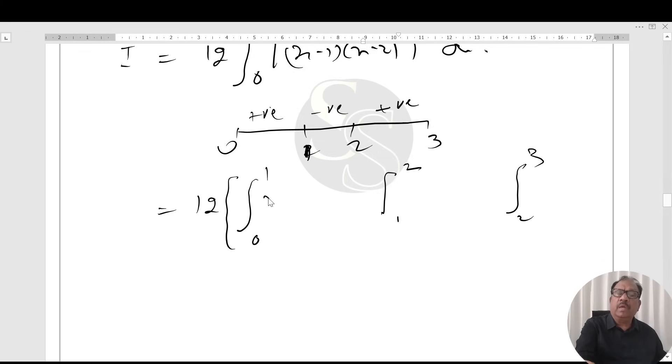This way, the positive integral is x squared minus 3x plus 2. Next will be plus, here minus (x squared minus 3x plus 2) dx, plus here x squared minus 3x plus 2 dx.